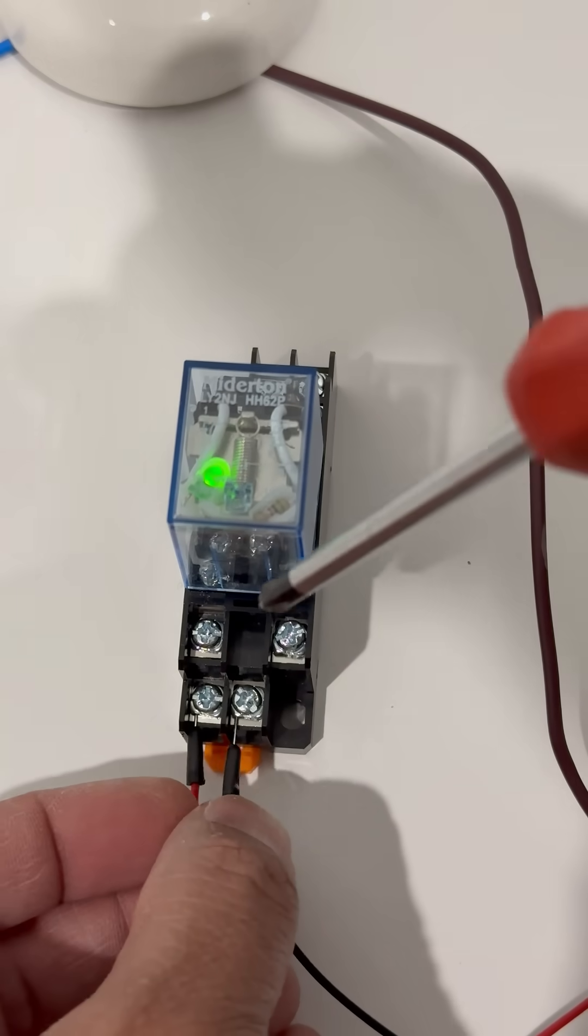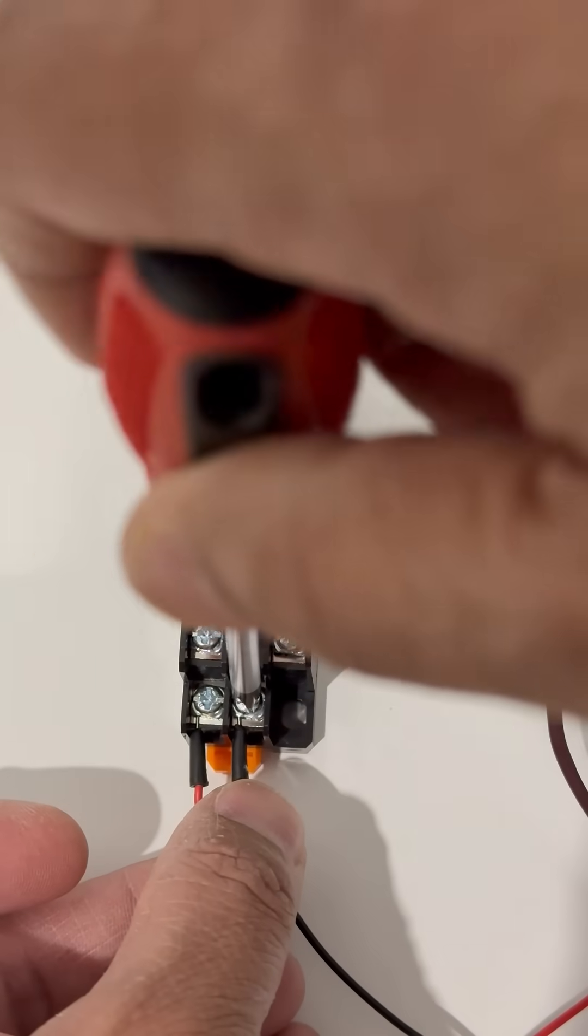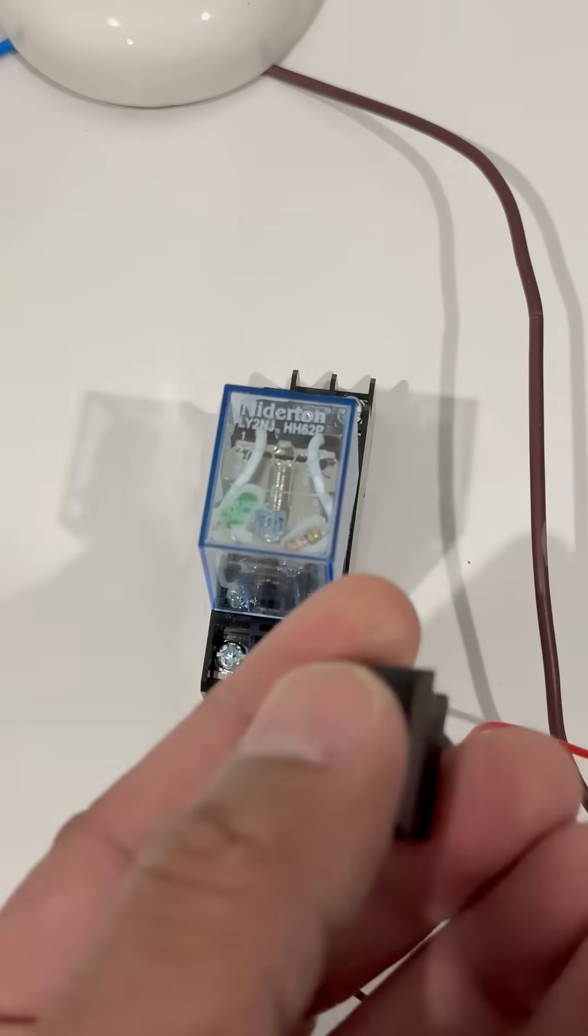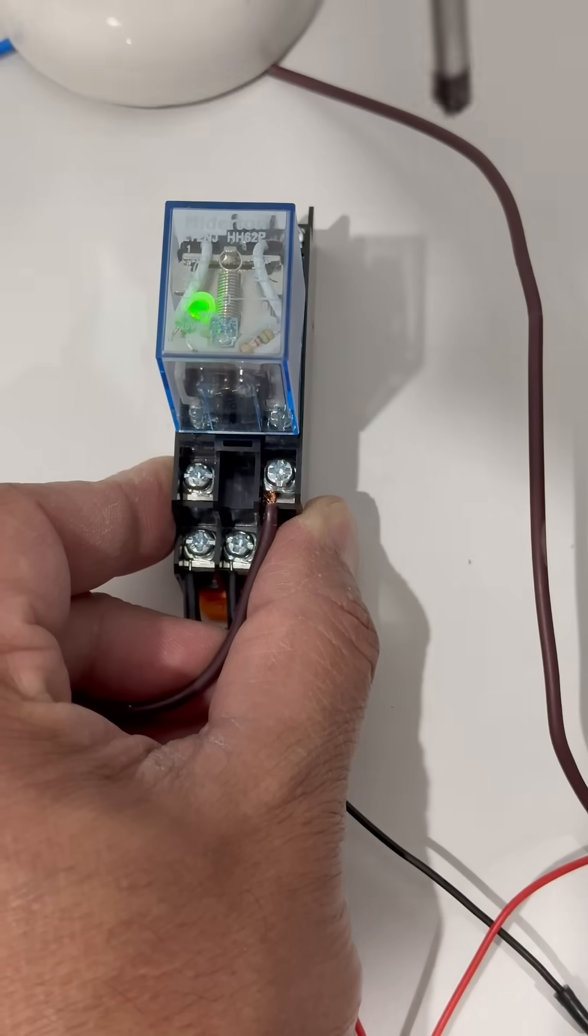Watch closely. With the relay off, the first bulb is on, and the second is off. But when we apply 12 volts to the coil, you'll hear a click.